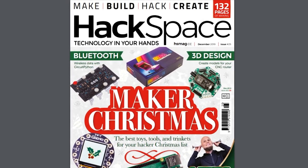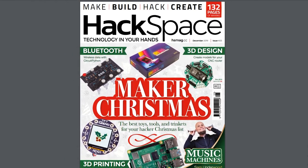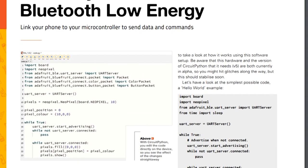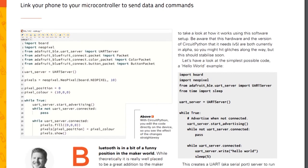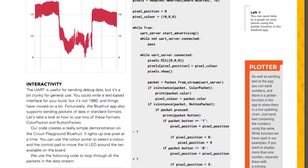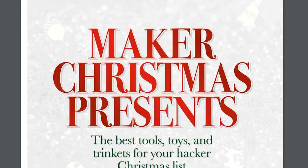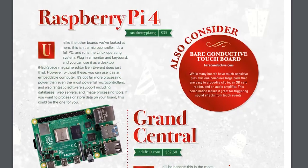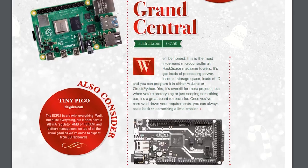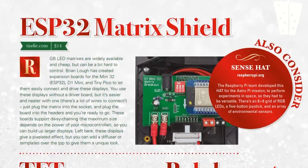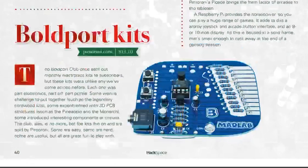Adafruit is covering a huge number of pages in issue 25 of Hackspace Magazine. There's a fantastic tutorial by Ben Everard covering CircuitPython and Bluetooth Low Energy, so you can use your smartphone with your microcontroller to record data, send commands, and more. And there's a massive 14-page gift guide by Adafruit covering the best maker presents you can give. Hackspace is available as a free PDF download, but if you subscribe to a hard copy for a full year, you'll get a free Circuit Playground Express. Not a bad deal.